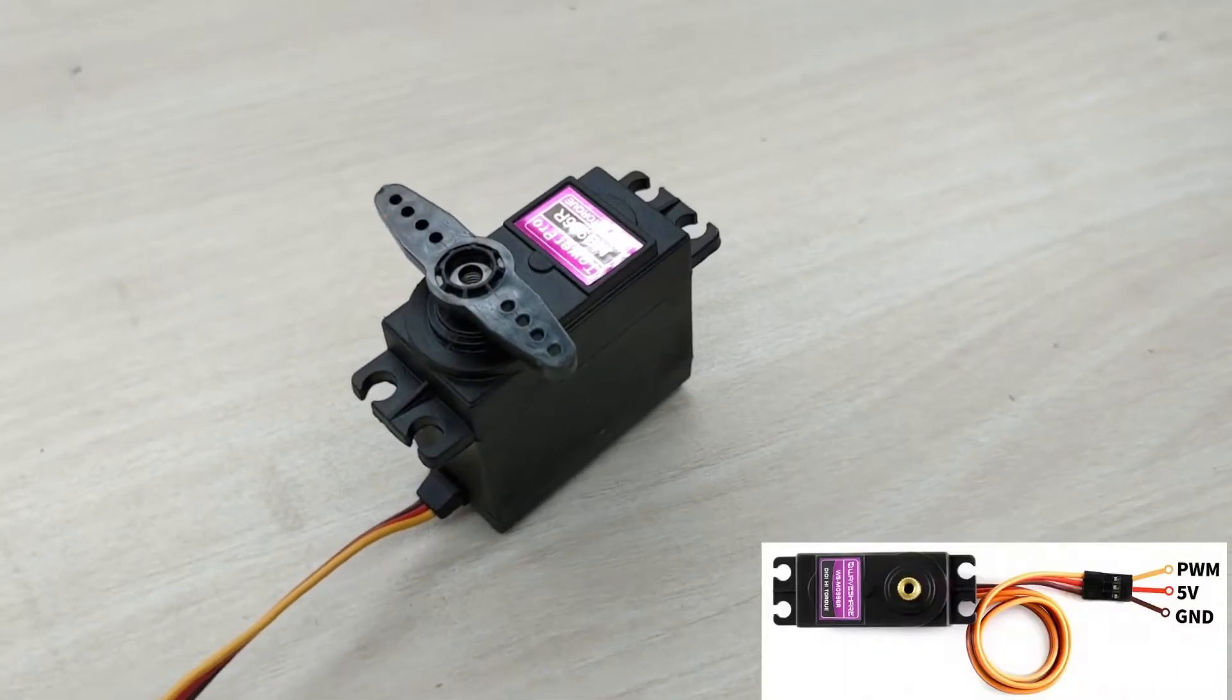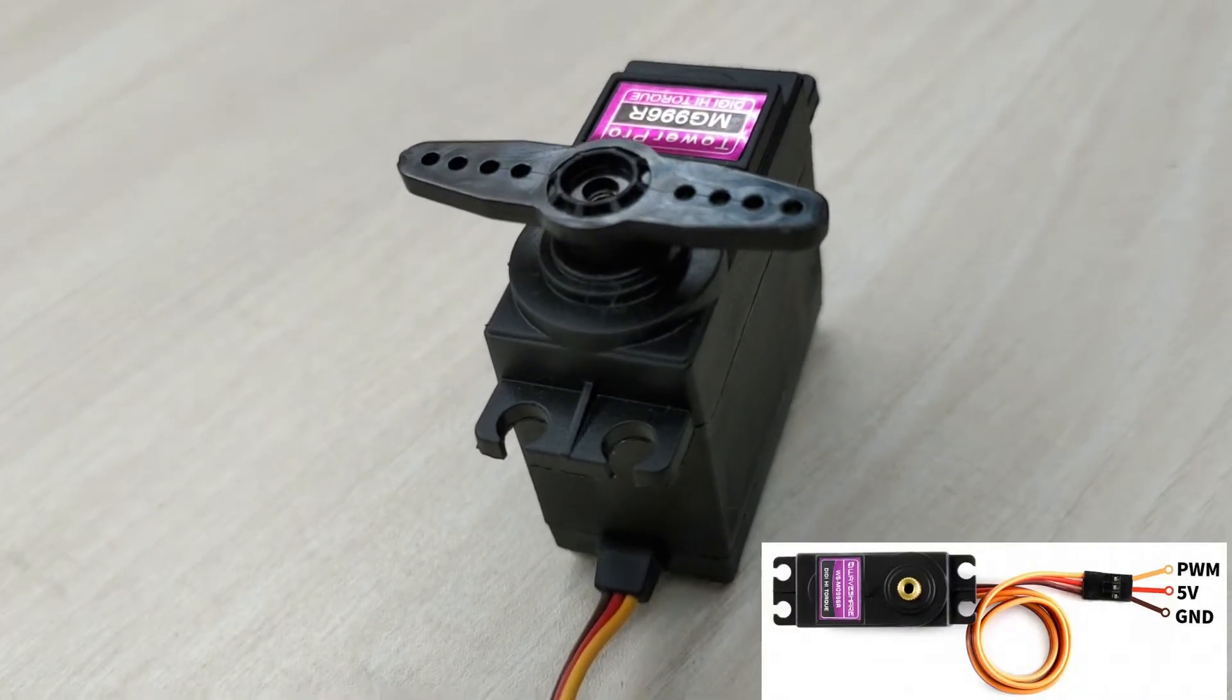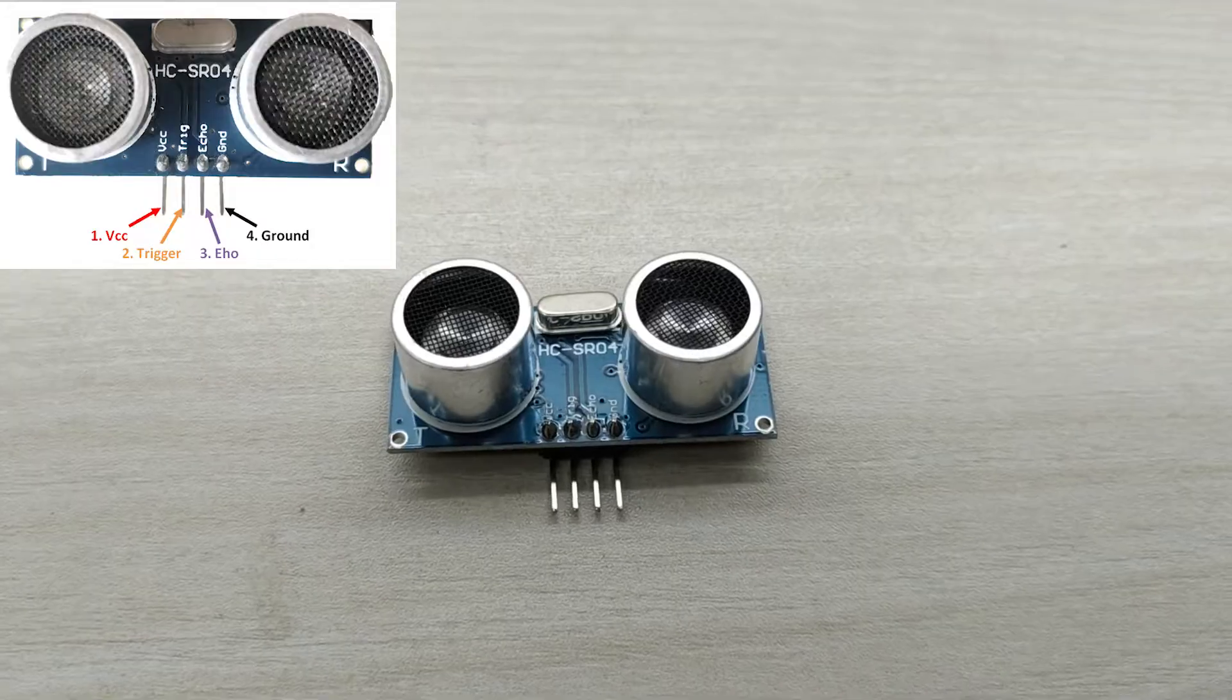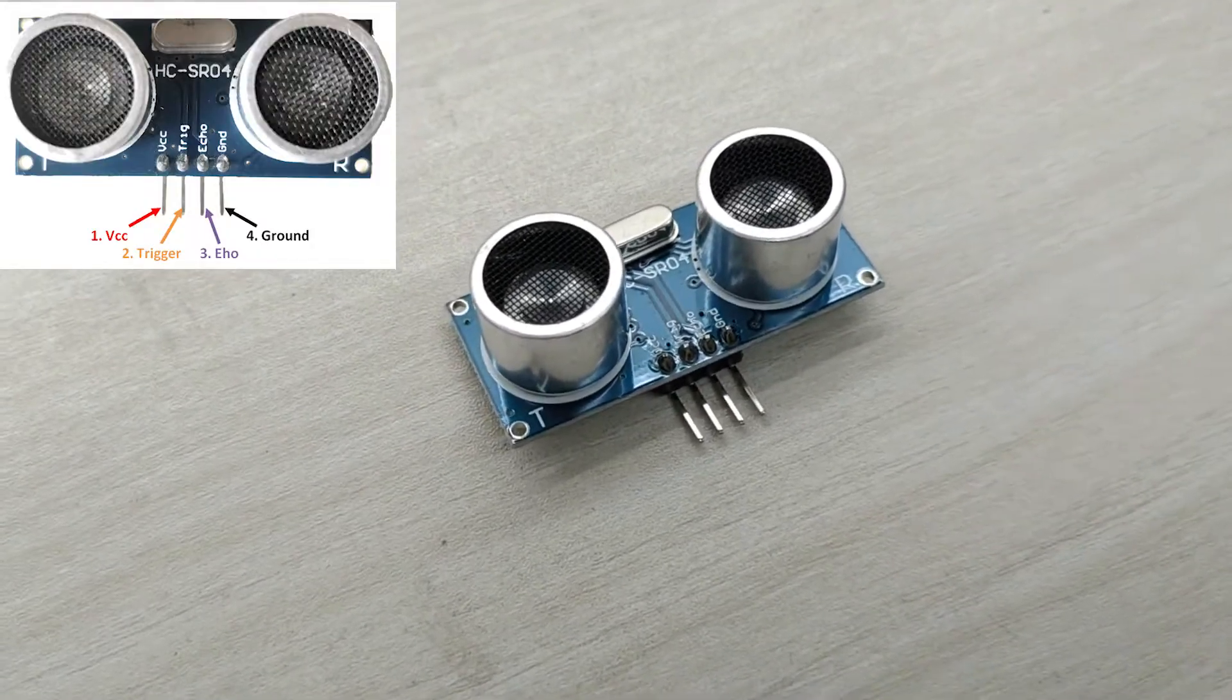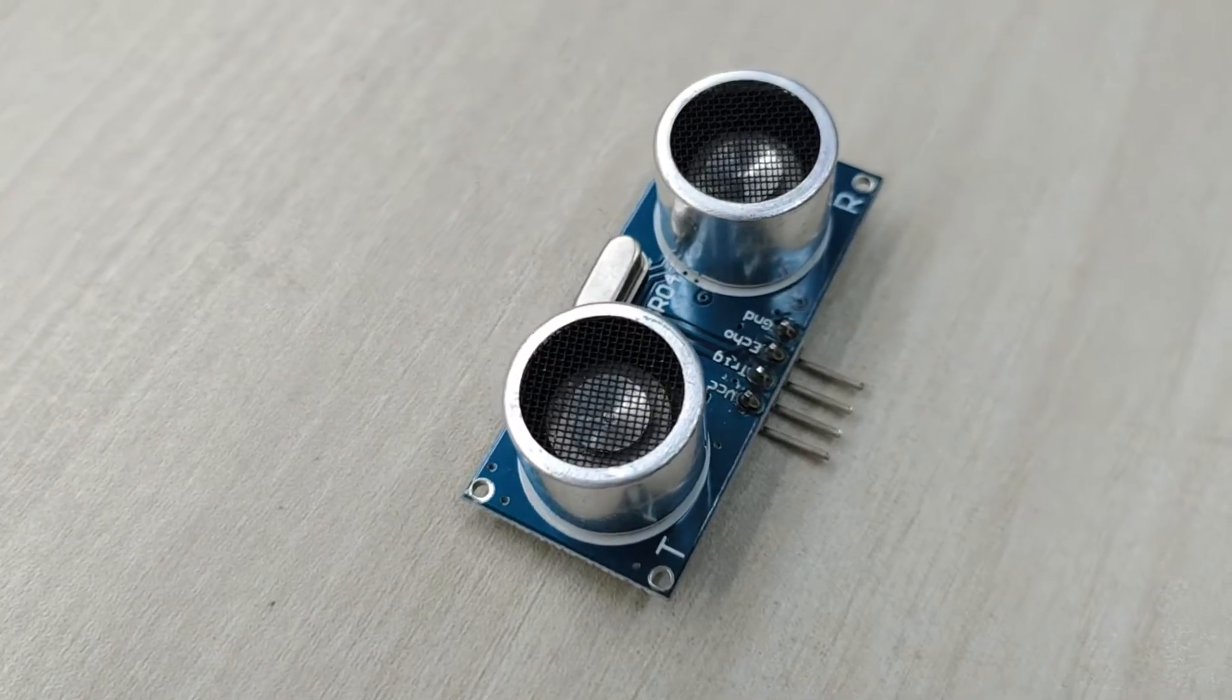A stepper motor is a DC motor whose rotational speed and position can be controlled. The ultrasonic sensor is used to determine the distance to an object by calculating time between the sent and received ultrasonic waves.